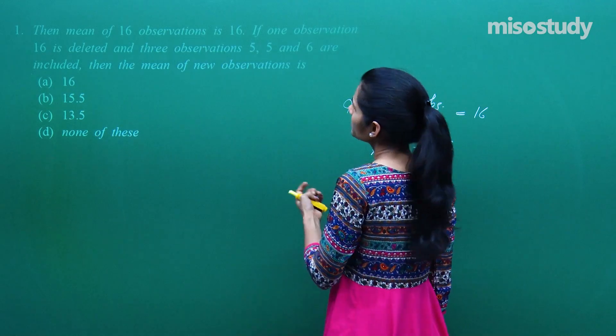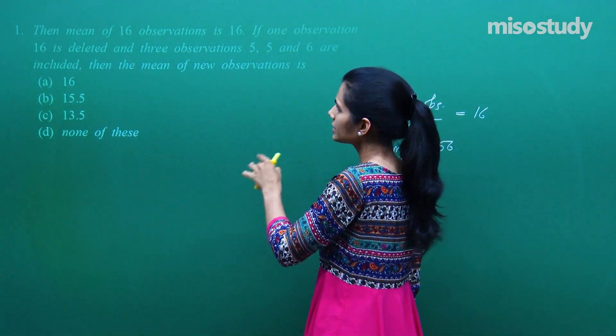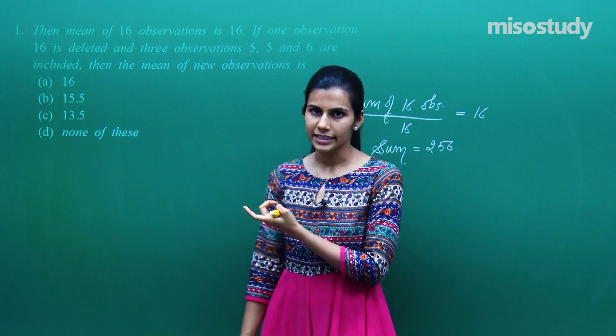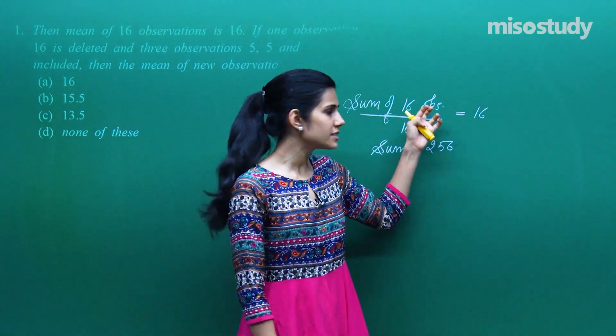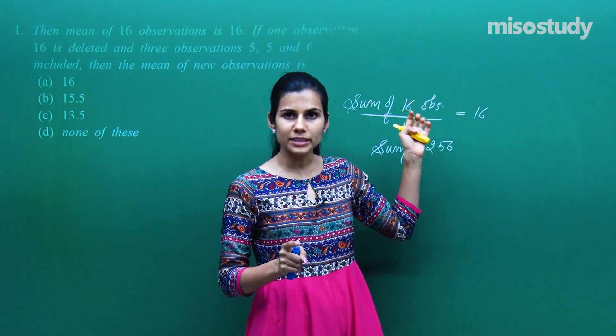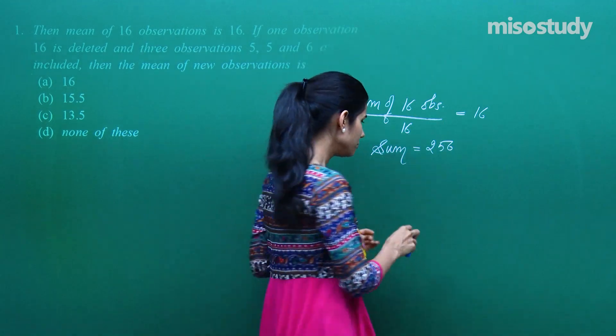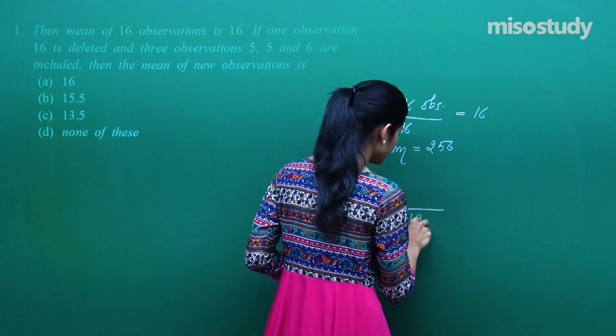16 observations mein se ek observation 16 ko delete kiya gaya aur 3 observations add ki gayi. 16 observations thi, us mein se ek delete ki toh bachi 15. 15 mein 3 aur add ki toh ho gayi 18. So now total observations are 18.